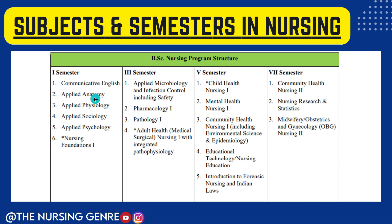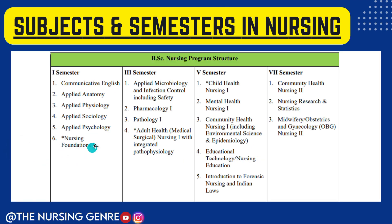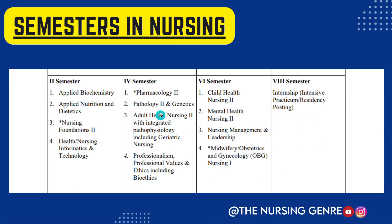In the first semester, the subjects are Communicative English, Applied Anatomy, Applied Physiology, Applied Sociology, Applied Psychology, and Nursing Foundation. Second semester includes Applied Biochemistry, Applied Nutrition and Dietetics, Nursing Foundation 2, Health, Nursing Informatics and Technology. First and second semester complete first year. Third semester includes Applied Microbiology and Infection Control including Safety, Pharmacology 1, Pathology 1, and Adult Health Nursing 1 with Pathophysiology. Fourth semester includes Pharmacology 2, Pathology 2 and Genetics, Adult Health Nursing 2, and Professionalism, Professional Values and Ethics including Bioethics. Third and fourth semester complete second year.